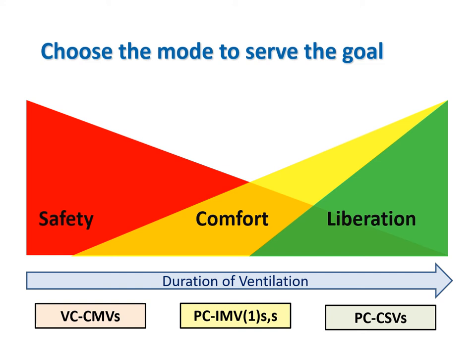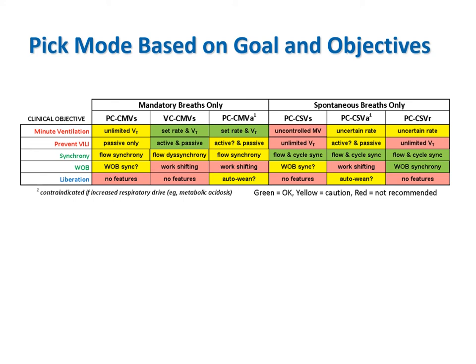Using the simplest modes that are commonly available, we could serve the goals of ventilation as follows. The goal of safety can be served with volume control CMV, provided there is little or no inspiratory effort. The goal of comfort could be served with pressure control, with strict attention to reduction of the mandatory breath rate as the spontaneous breath rate becomes reliable. Liberation is served with pressure support, with strict attention to reduction of inspiratory pressure as patient strength improves. Pressure support is often also used for spontaneous breathing trials. This is a portion of a pocket card we give to students that helps summarize these ideas.